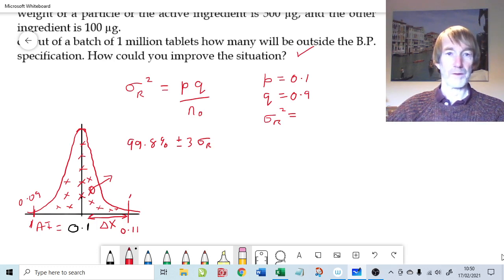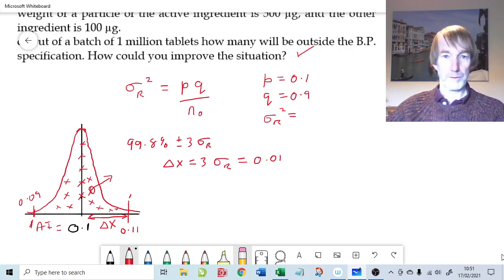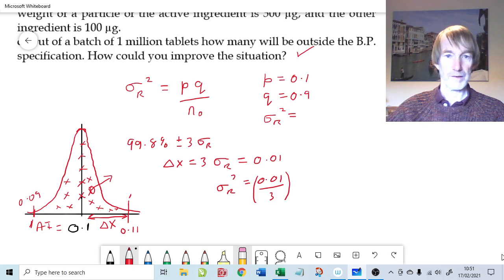Our variation delta x is equal to 3 times the standard deviation. Delta x was equal to 0.01 because we're told 10% variation around the mean is acceptable. So sigma r is equal to 0.01 over 3, and we want sigma r squared because the variance is the square of the standard deviation, so that gives us a square on both sides.